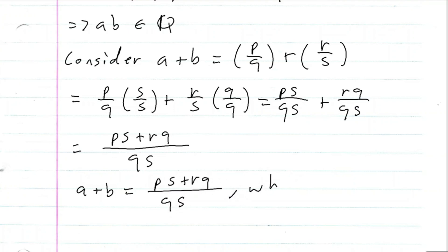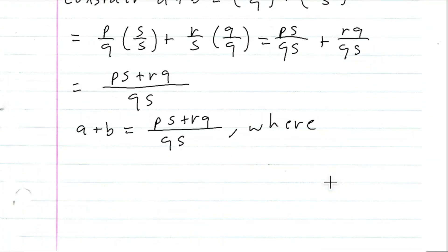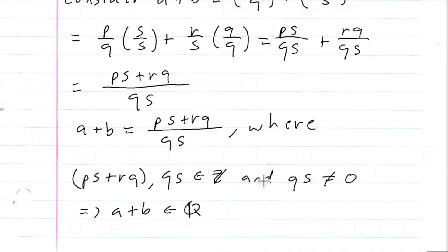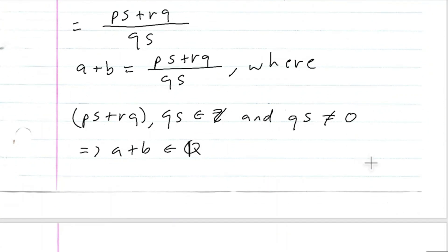So we have that A plus B is equal to PS plus RQ over QS, where PS plus RQ and QS are integers, and QS is not equal to zero. This implies that A plus B is a rational number as well. And that's our proof.